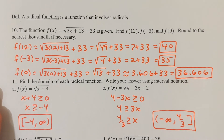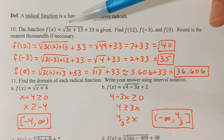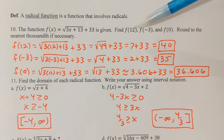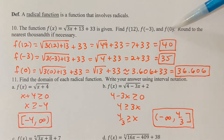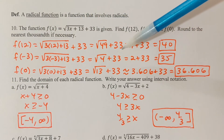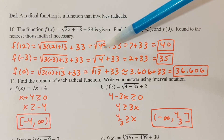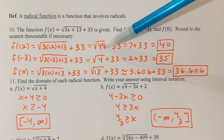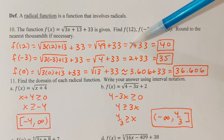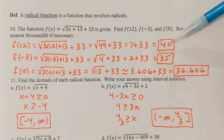A radical function is a function that involves radicals. Suppose we have the function f of x — I want to find f of 12, f of negative 3, and f of 0. f of 12 means I replace x with 12 and simplify: 3 times 12 is 36, plus 13 is 49. The square root of 49 is 7, and I've still got the plus 33, so 7 plus 33 is 40.